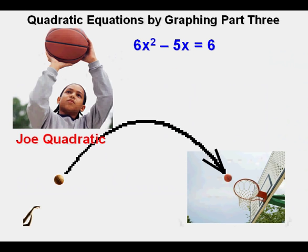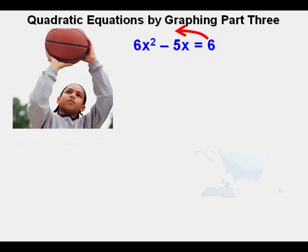Joe will now work on the equation 6x² - 5x = 6. The first thing he does is to get the right side equal to 0 by moving the 6 to the left side of the equation.